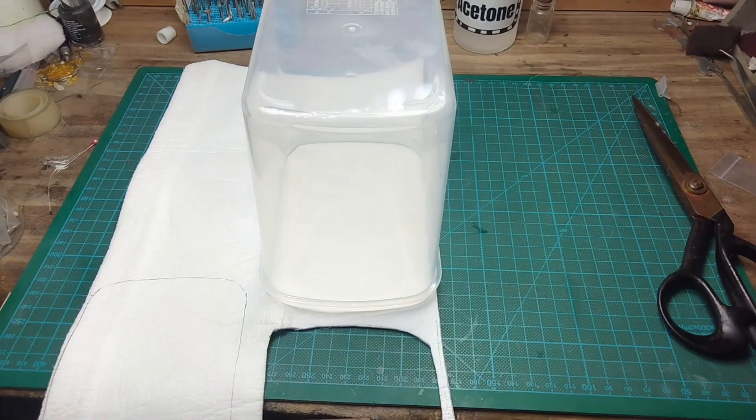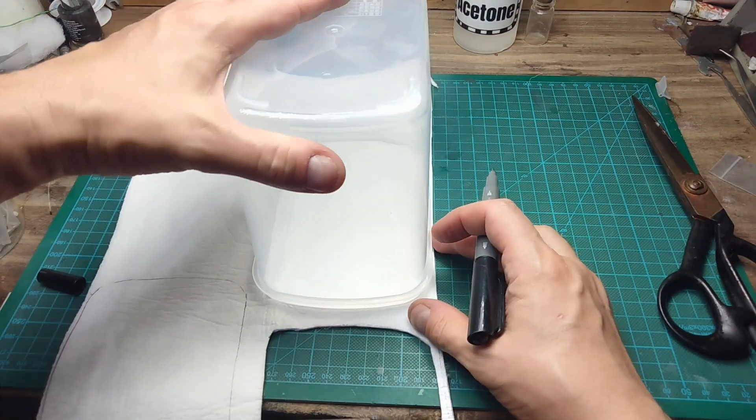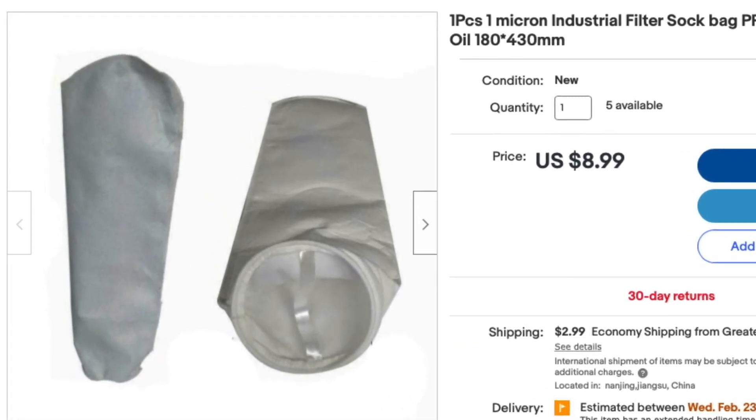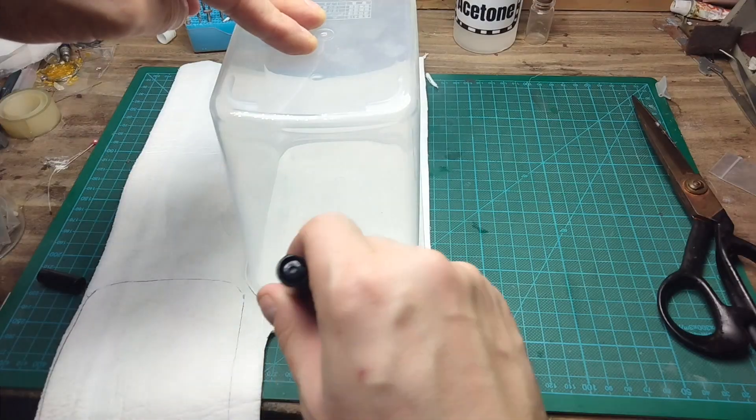I'm using 1 micron filter bag material. Now let's cut it into shape. A lot of you already use this for anode bags and it can be purchased for under $10 from Amazon or eBay. They can also be found in pet shops and hardware stores.